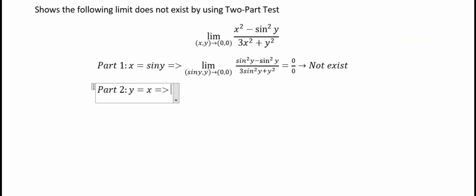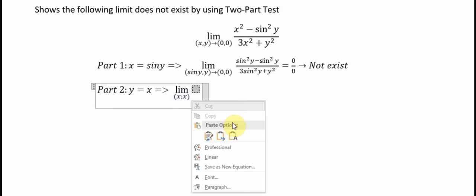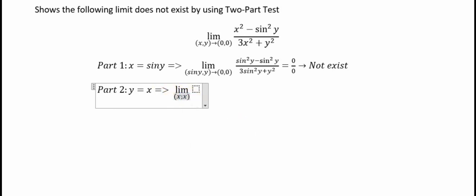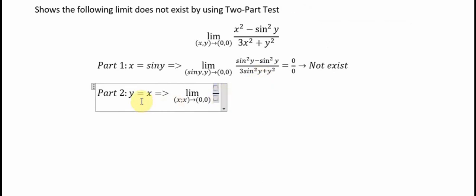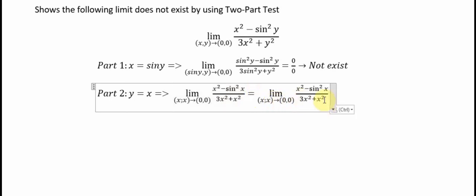Part number two: y is equal to x. So we put the limit in here, with x and y both going to zero. Substituting y equals x, the numerator becomes x squared minus sin squared x, and the denominator becomes 3x squared plus x squared, which equals 4x squared.